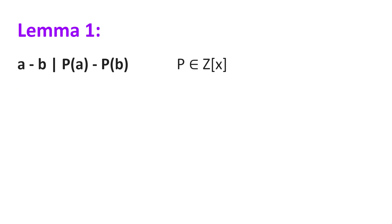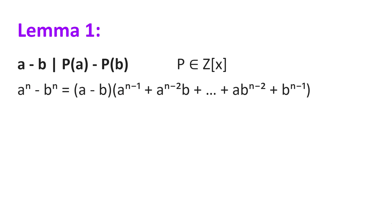First, we will show that (a - b) divides p(a) - p(b), where a and b are integers and p is a polynomial with integer coefficients. It is very well known that a^n - b^n equals (a - b) multiplied by (a^(n-1) + a^(n-2)·b + ... + a·b^(n-2) + b^(n-1)). So (a - b) divides a^n - b^n.